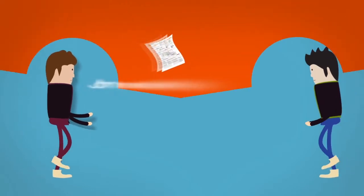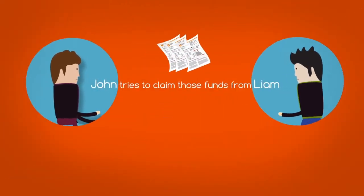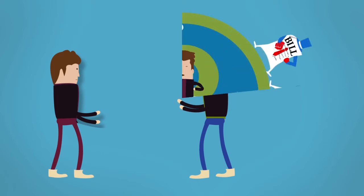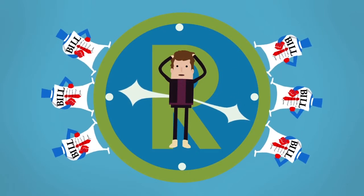But when John tries to claim those funds from Liam, Liam is either nowhere to be found or accuses John of manipulating the utility bill. This is never a good time of the month for John.